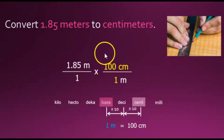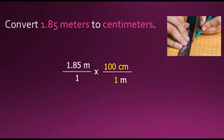This fraction has a value of 1 when we have equivalent values in the numerator and denominator. Multiplying by 1 does not change anything, but this is our procedure in dimensional analysis to change units. Canceling out the common factor of meters, then multiplying numerators together results in 185 in the numerator. The denominators multiply to give 1, and dividing by 1 does not change the value, giving us 185 centimeters.